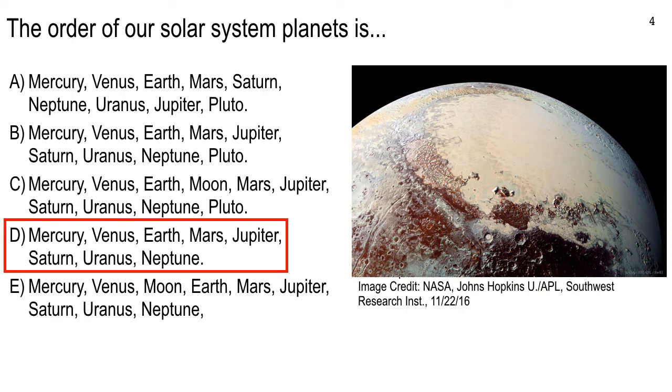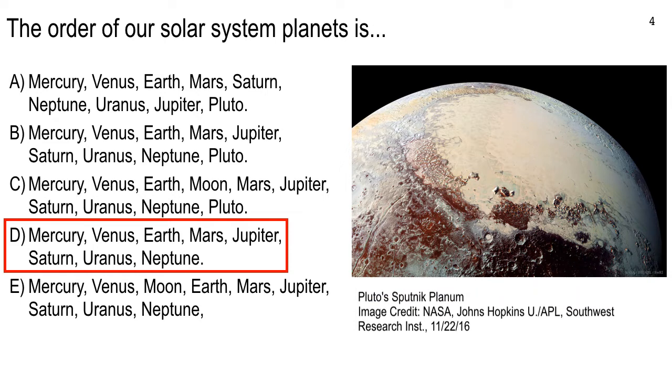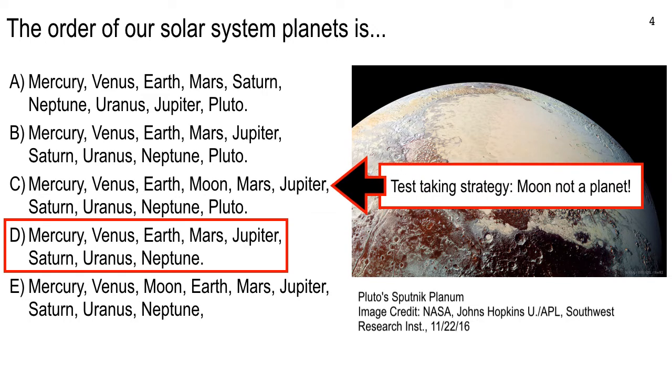Now, the correct answer is D: Mercury, Venus, Earth, Mars, Jupiter, Saturn, Uranus, and Neptune. I want to talk about some of the different strategies to settle on that because in lecture, you can sometimes have to think about things also on midterms in web courses. This picture is a picture of the Sputnik planum on Pluto that was recently recorded just a few years ago. So option C is no good because moon's on the list. If you don't read carefully, you'll miss that. Moon is not a planet. So that one's out.